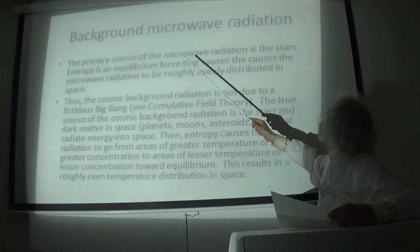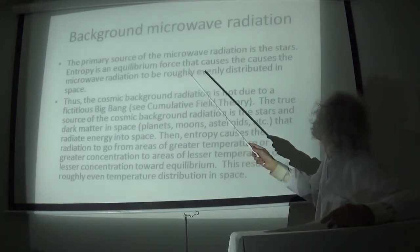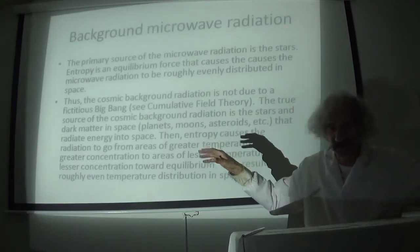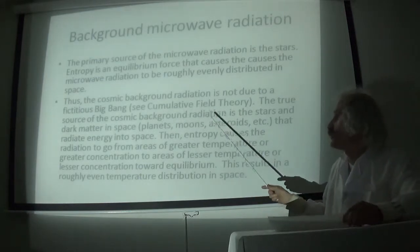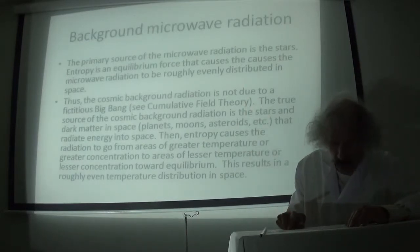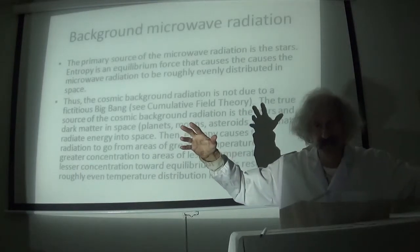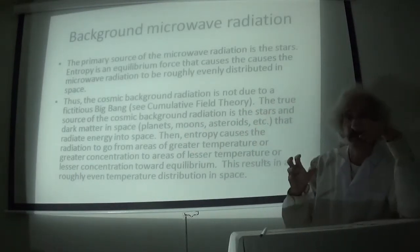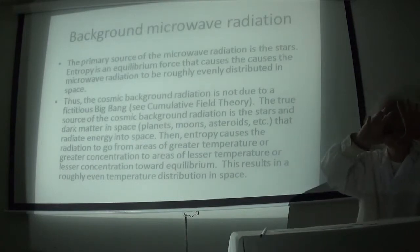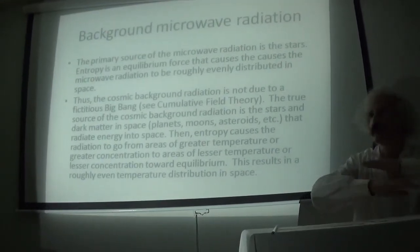Background microwave radiation. The primary source of the microwave radiation is the stars. Entropy is an equilibrium force that causes this radiation to spread throughout space. Thus, the cosmic background radiation is not due to a fictitious Big Bang. I discussed this in my cumulative field theory. The true source of the cosmic radiation is the stars, which are throughout space, and also the dark matter. Entropy causes the radiation and the temperature to go from greater temperature, like near the stars and planets, to lesser temperature in space toward equilibrium, so that the temperature will be roughly evenly distributed throughout space.